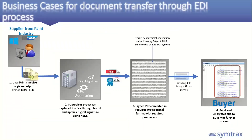Let's discuss electronic data interchange with a business case from the paint industry. This customer was already using our solution for digital signatures. As SAP users, they processed documents through the SAP-certified connector into Compleo, signed them centrally using HSM, and sent documents for printing at respective locations. Their customer then demanded digitally signed documents be uploaded to their portal via API. Using Compleo, we converted the format to hexadecimal and uploaded the document through the given API to their respective ERP platform, digitizing their end-to-end business process.